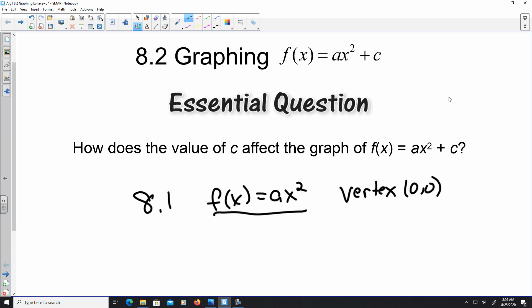Today, the vertex will not be located just at (0, 0). When you get a number for c other than 0, we're going to take into account that in 8.2, f(x) = ax² + c, our vertex is now going to be located at (0, c). We're going to get into other shifts of vertex in 8.3. But for now, that's what it's going to look like today when you have it in this format.